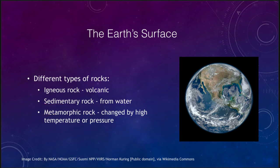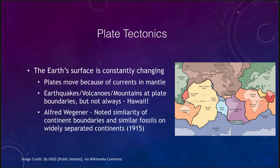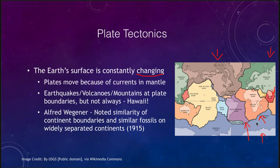The Earth's surface is divided into a number of different plates, and it is constantly changing. We are under a constant state of change on the Earth's surface. You see a number of plates here, including the North American plate, the Eurasian plate, the South American plate, the Antarctic plate, the plate for Africa, India as a separate plate, and the Australian plate.